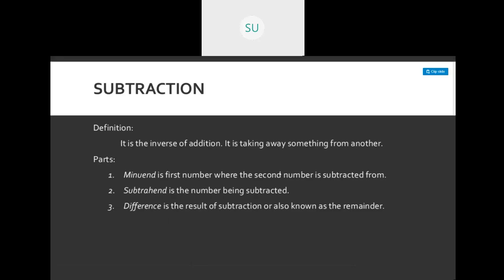The next operation is subtraction. It is the inverse of addition — it is taking away something from another. For example, if you had 4 apples and you ate 2 apples, you are left with 2 apples. You took away 2 apples from the set of 4 apples, so you subtracted them.